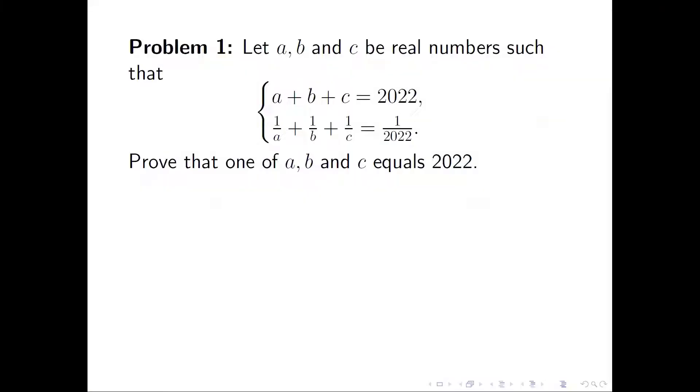We are going to solve two problems. The first one: let A, B, and C be real numbers such that the sum of the three numbers is 2022 and the sum of the reciprocals is 1 over 2022. Prove that one of the numbers A, B, or C equals 2022.